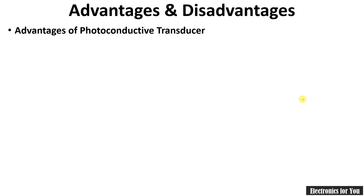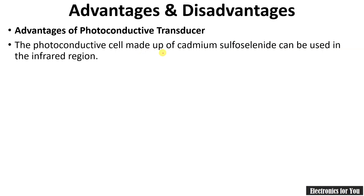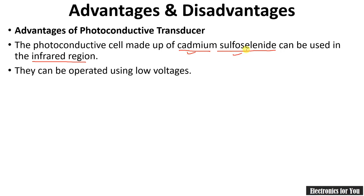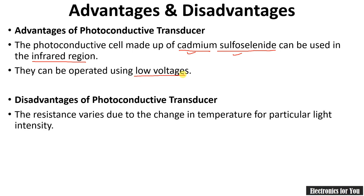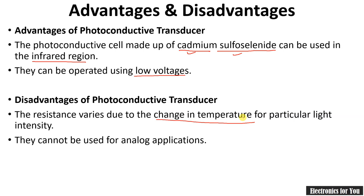Some advantages and disadvantages of the photoconductive transducer: the photoconductive cell is made up of cadmium sulphide; cadmium selenide can be used in the infrared region by simply changing the material. They can be operated using low voltages. Disadvantages: the resistance varies due to changes in temperature, so not only light but also temperature affects the output. They cannot be used for analog applications — this is an important disadvantage.